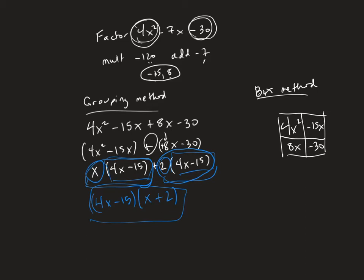Now, this is really just like the grouping method, it's just more visual. So I'm going to look at the first row and say, what's the common factor between 4x² and -15x? Well, 4 and -15, common factor is just 1. x² and x, common factor is an x. So I'm going to write that common factor out in front of that row.